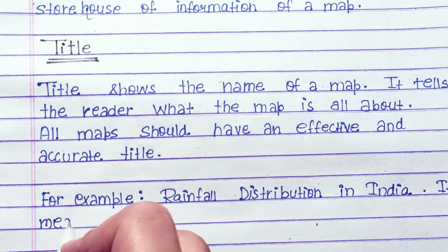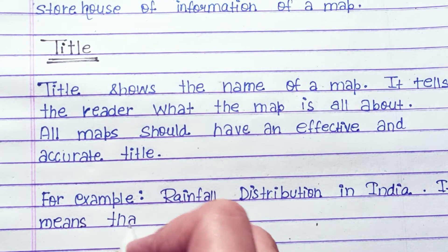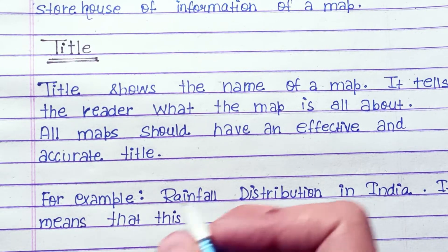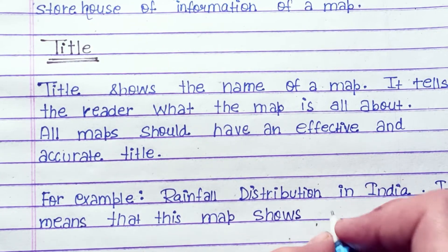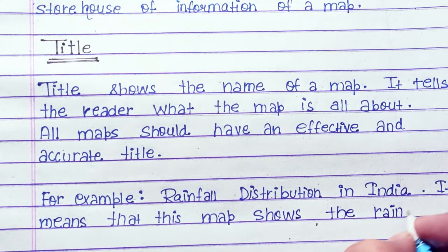So the very first is title. Title shows the name of the map. It tells the reader what the map is all about. All maps should have an effective and accurate title.